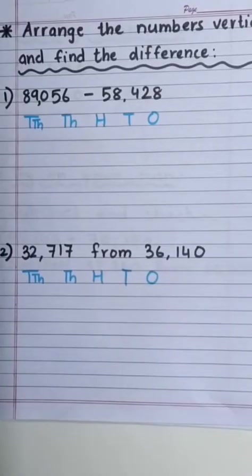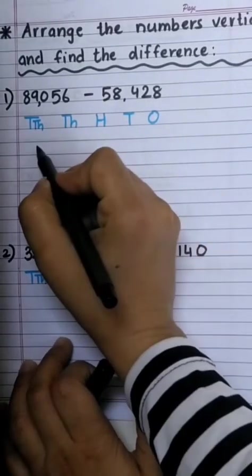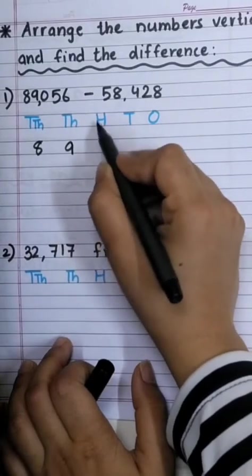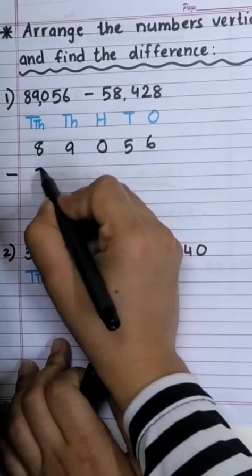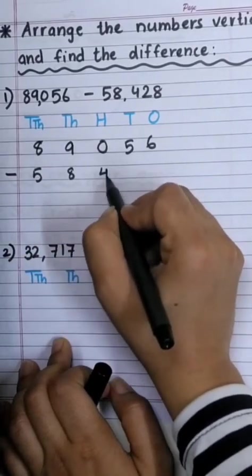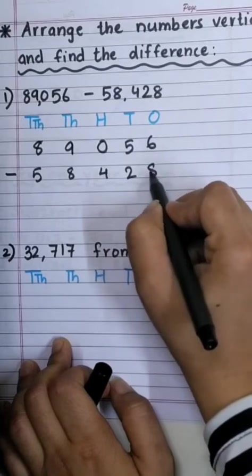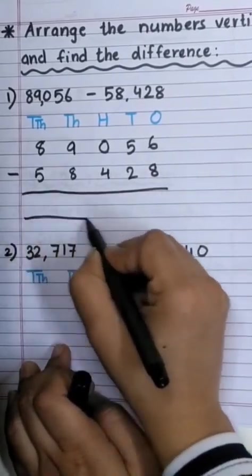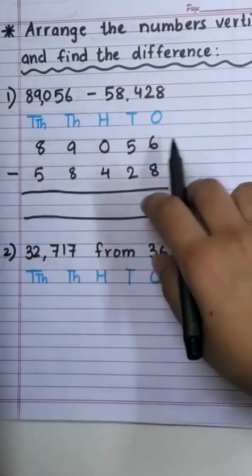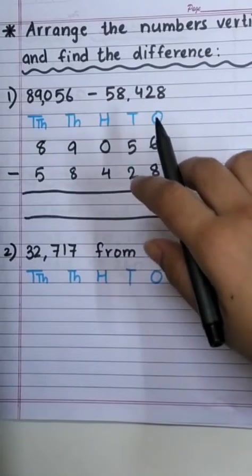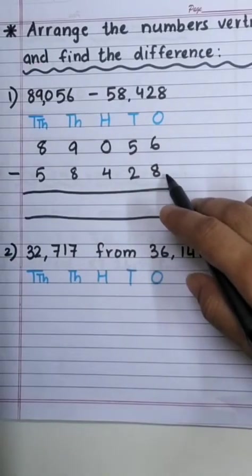Arrange the numbers vertically and find the difference. So, in order to arrange, we have to place the numbers according to their place value. 89,056 minus 58,428. Always remember, when we subtract, the number in the upper row should be larger than the number in the lower row. Okay!